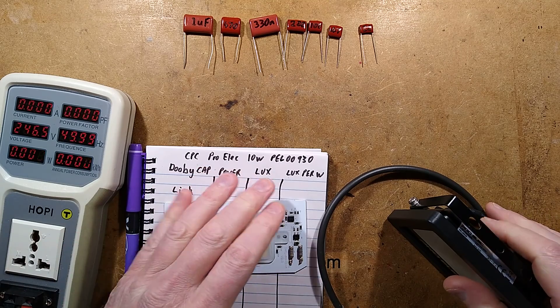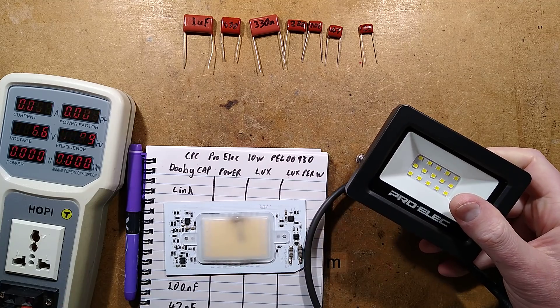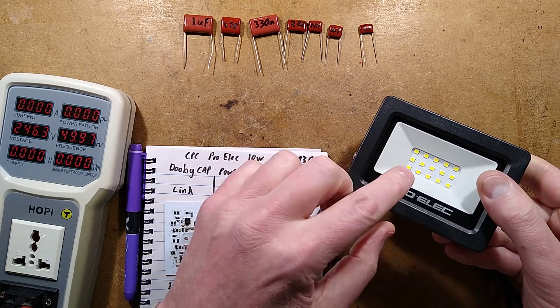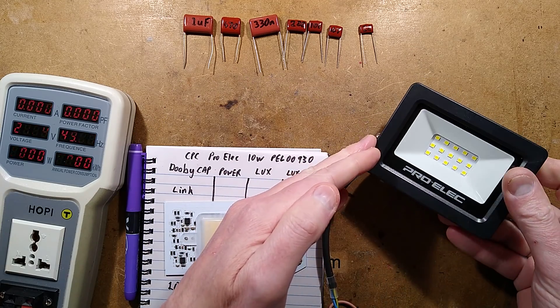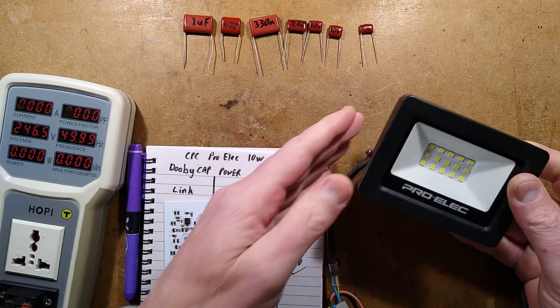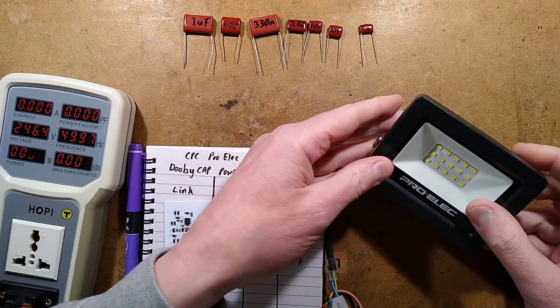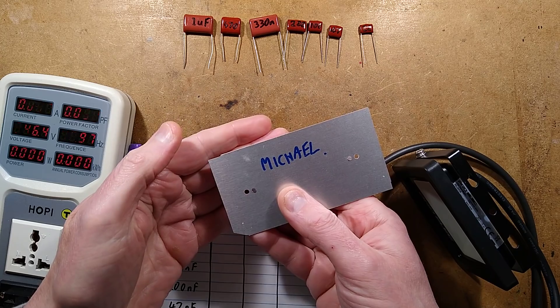It is time for an experiment, an experiment that actually started during a recent live stream on the Big Clive live channel when I tried some capacitors, different value capacitors in series with a little 10 watt LED floodlight from CBC. It's a ProElec 10 watt floodlight. This is one of these floodlights that uses the chips that are basically wired in series with current regulating circuitry like this unit that was sent by Michael.